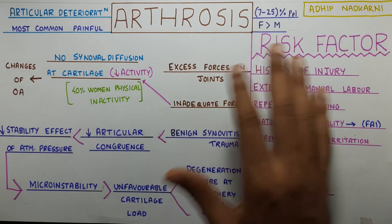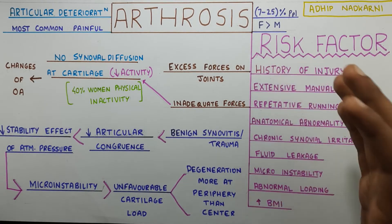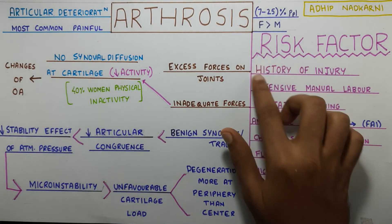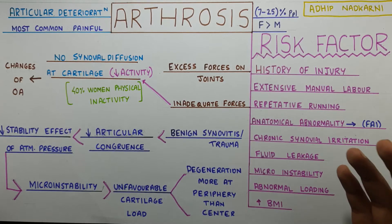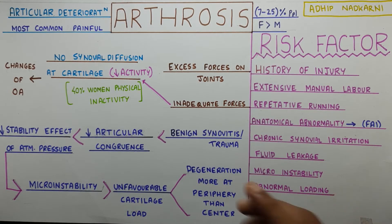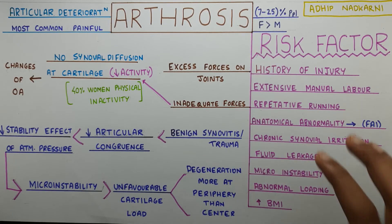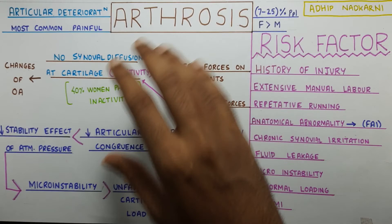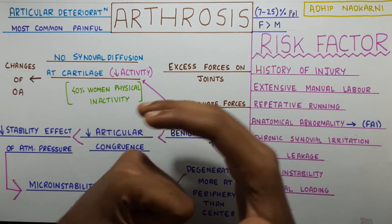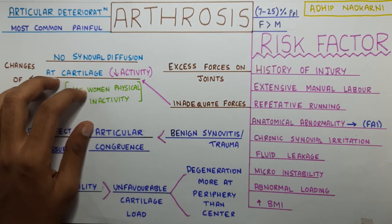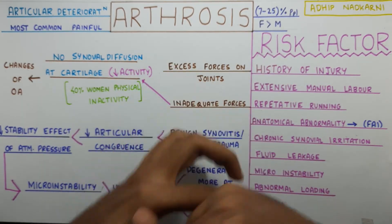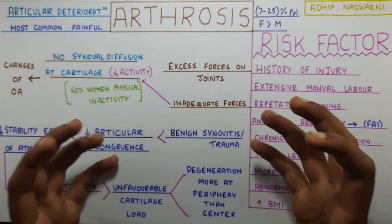This is a very important point: degeneration often occurs more at the periphery than the center, even though the center bears more weight in standing or sitting. To summarize: risk factors include excessive BMI, excessive manual labor and repetitive running, post-injury effects causing chronic synovial irritation, fluid leakage, micro instability, and abnormal loading, as well as anatomical abnormalities and femoroacetabular impingement. The pathology occurs via increased or reduced forces — reduced forces reduce synovial fluid diffusion causing osteoarthritic changes, or excessive synovial fluid causes instability, improper cartilage loading, and peripheral degeneration.